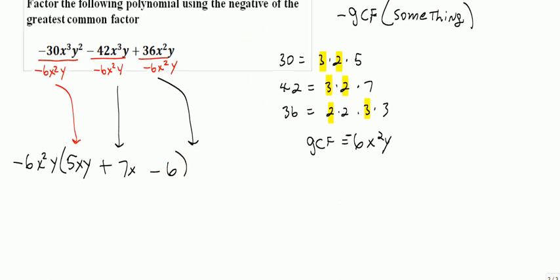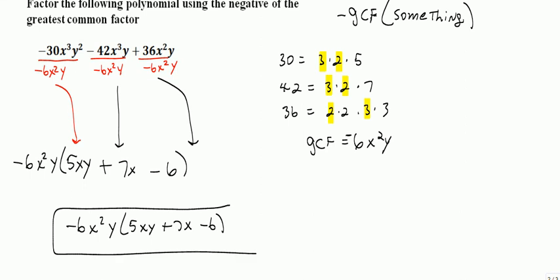And as I've always said, you should check that answer to make sure that when you distribute negative 6x squared y times 5xy plus 7x minus 6, when you distribute that through, you should get back to the original problem. And we will in this case, but it's always a good idea to check.